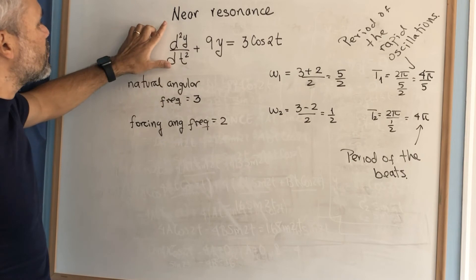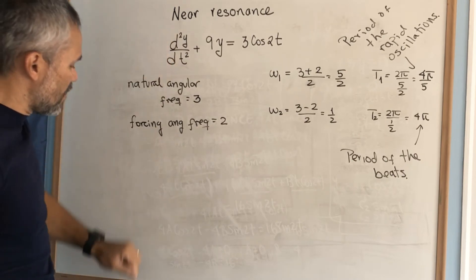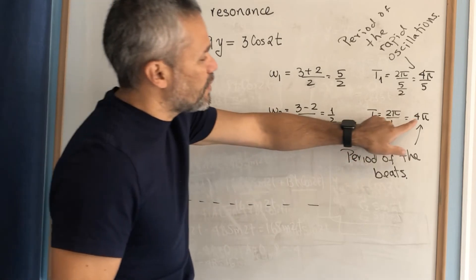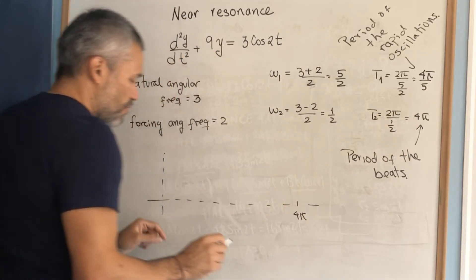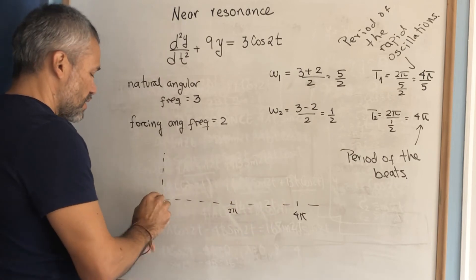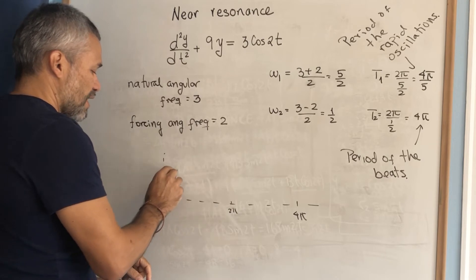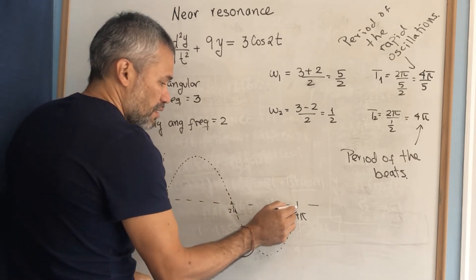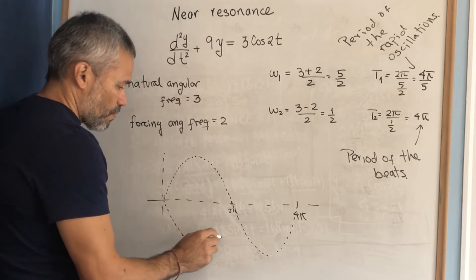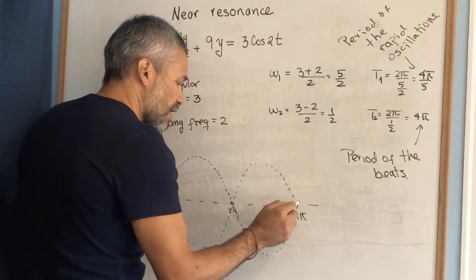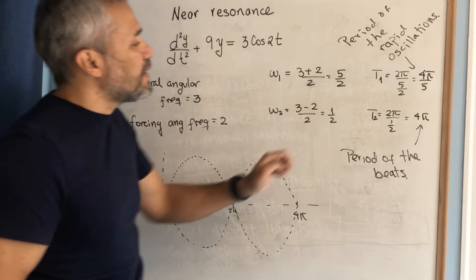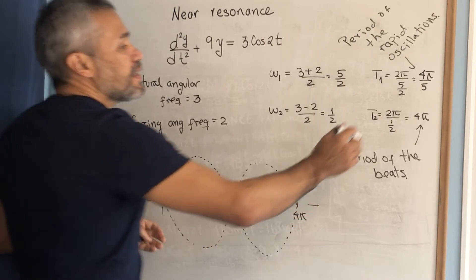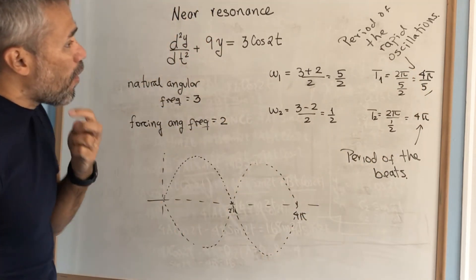We have two periods. To sketch the solution of this differential equation, we first draw something that looks like a sine function but with the beats period of 4π. Half of that period is 2π. We draw a dashed graph — a sine and negative sine — to form the beats envelope, and we call these the peaks. Then we divide the time axis into intervals of length 4π/5, which is the period of the rapid oscillation. We divide the full period into five pieces.